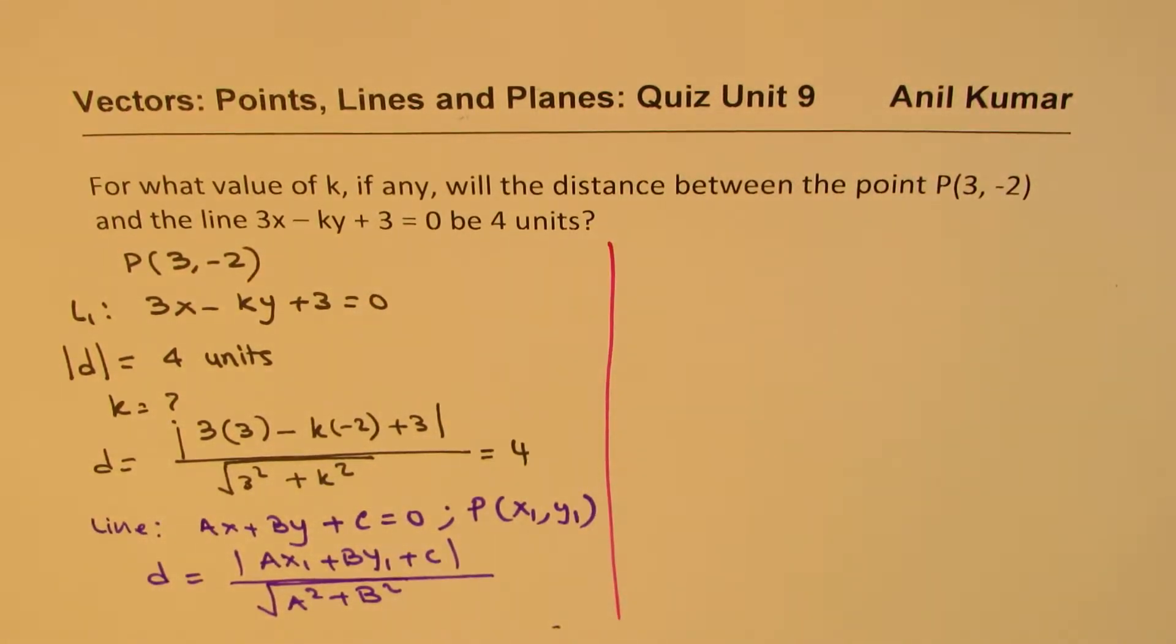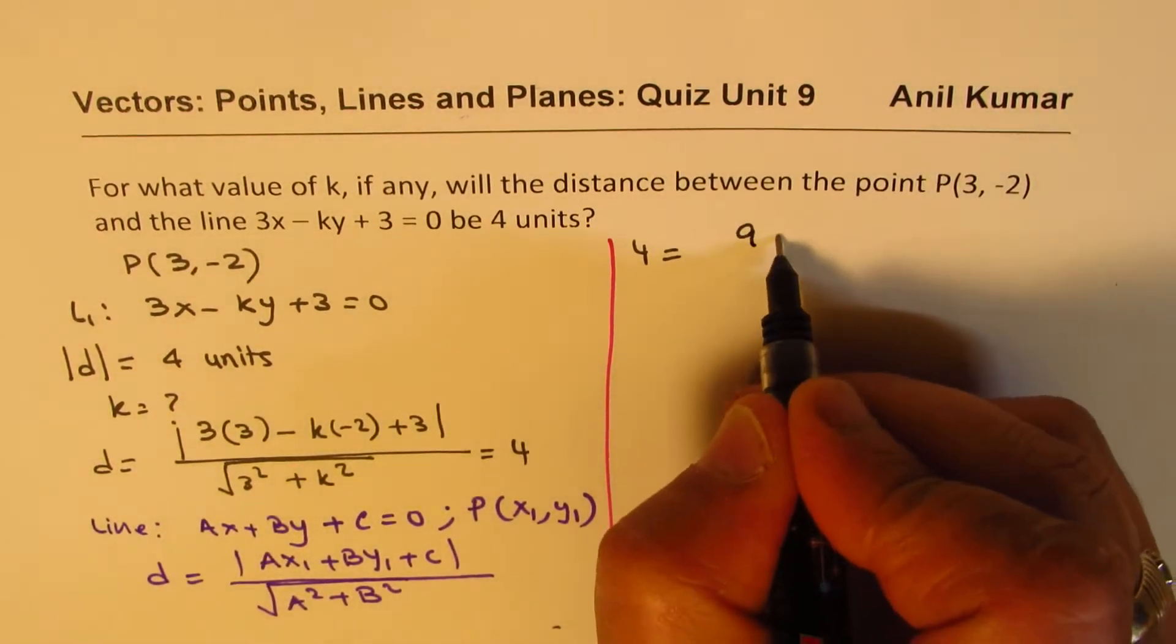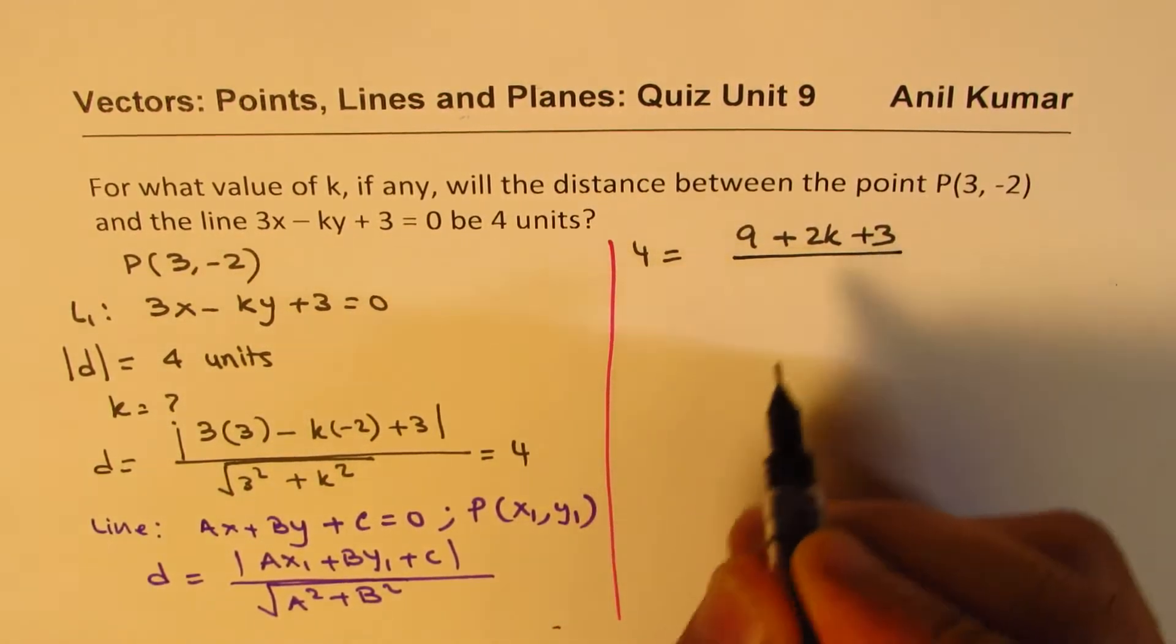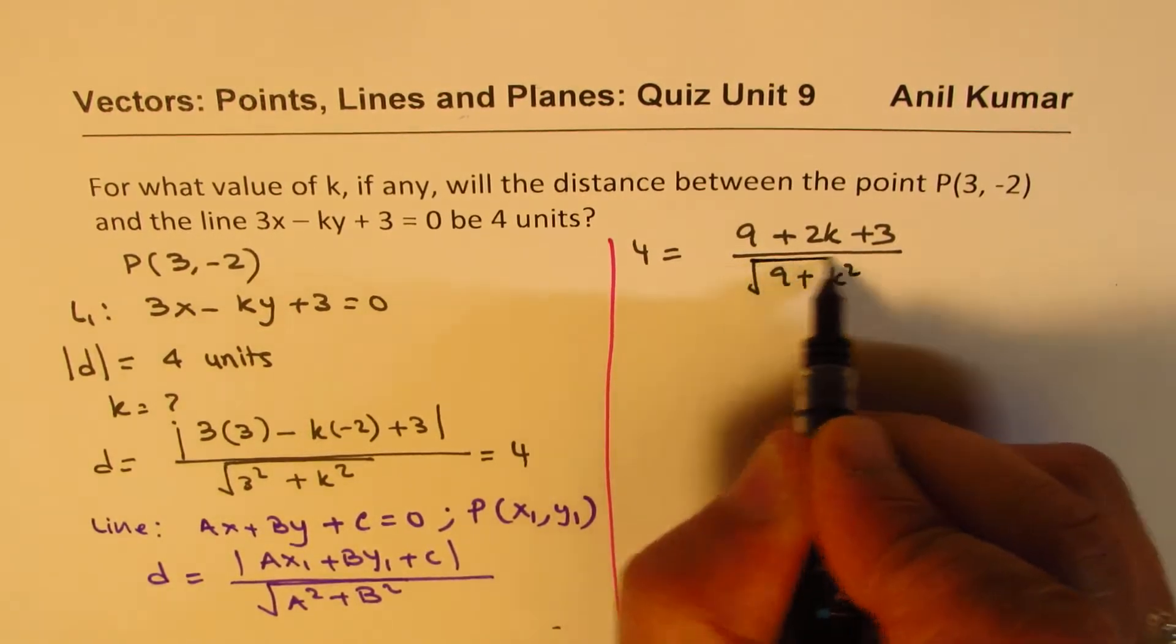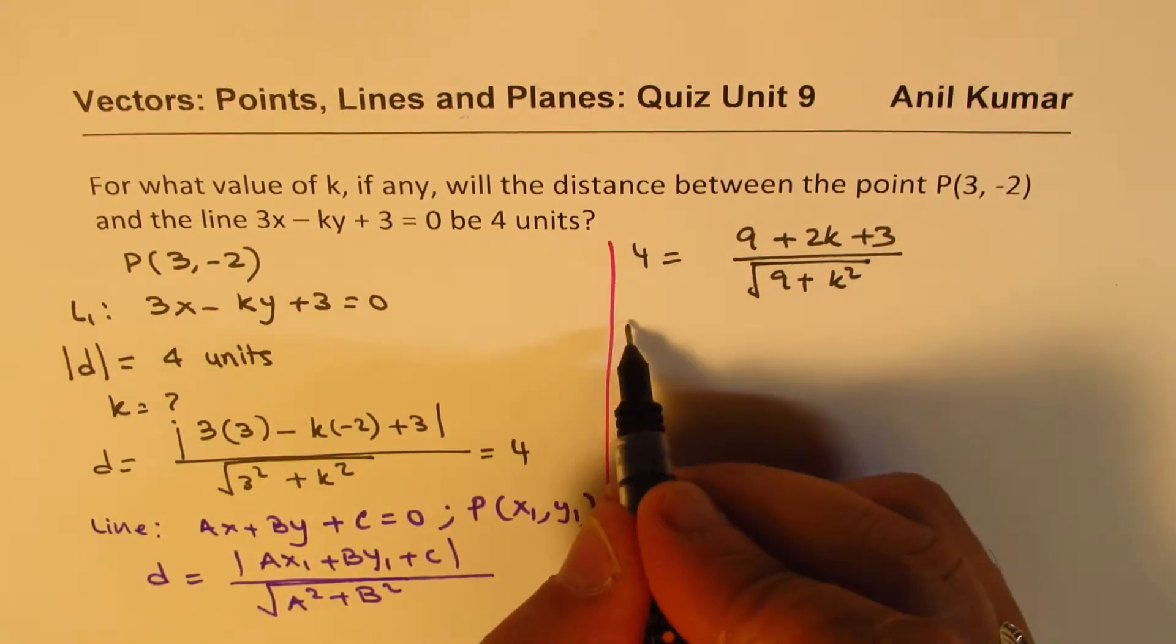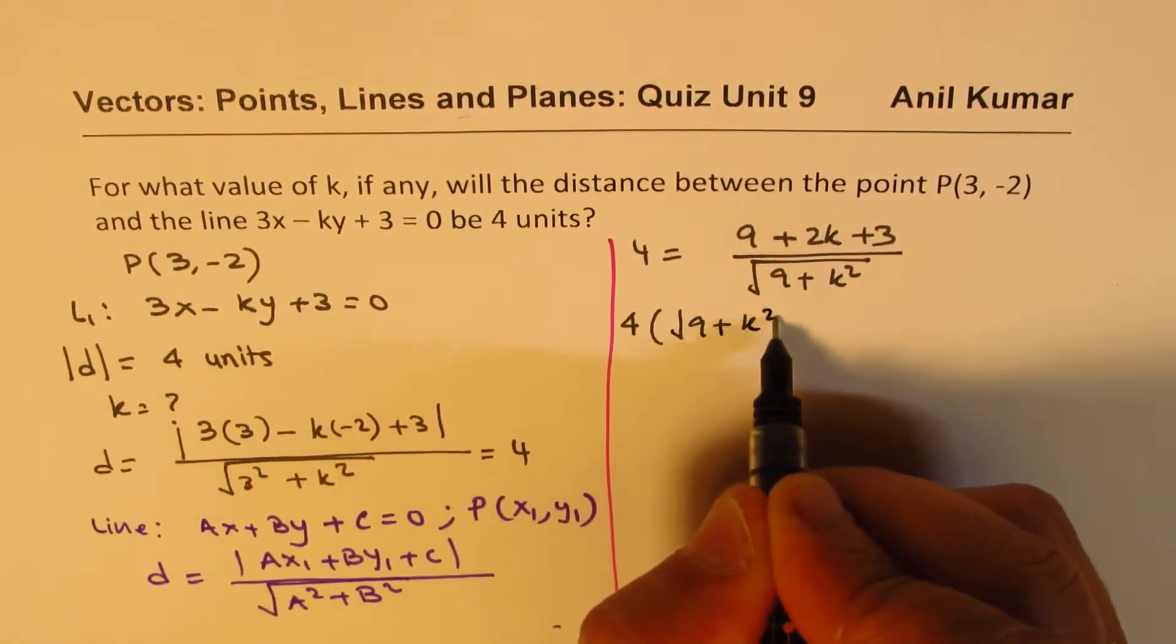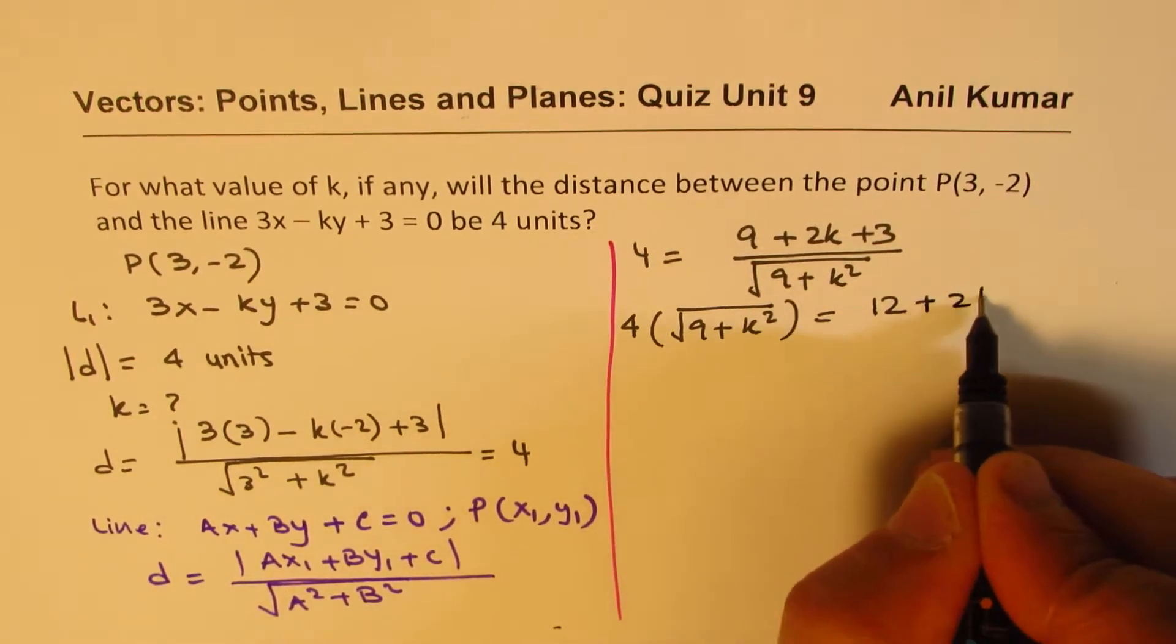So it's a question of just calculating the value, working with this equation. So what we get here is that 4 = (9 + 2k + 3) / √(9 + k²). So we can cross multiply, so we get 4√(9 + k²) = 12 + 2k.